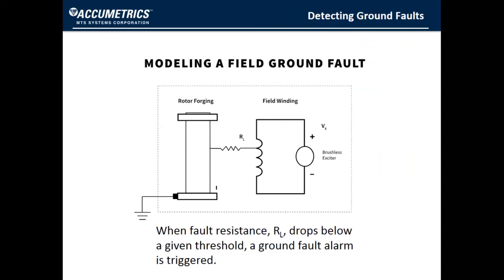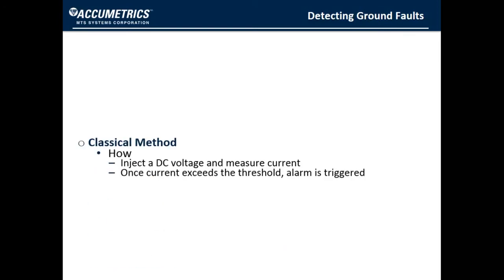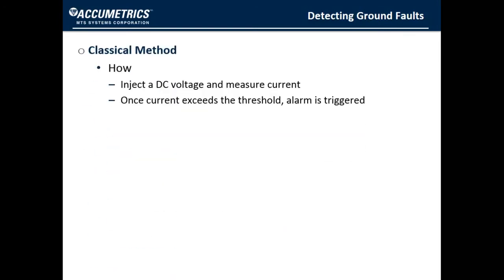So, once you have access to the rotor, how do you detect a ground fault? A ground fault can be modeled as a resistance between some location on the field winding and the rotor forging. First, we will look at the classical method that almost all ground fault detectors use. Typically, a detector makes a connection to the rotor forging and then to some location on the excitation circuit, in most cases the negative terminal.